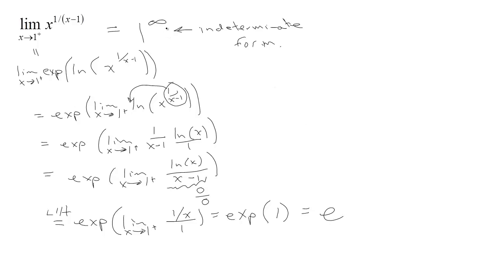So we had an indeterminate form that involved trouble with the exponent. We said, if we could take the natural log of this, the exponent could come down. So we took the natural log, but you can't just take the natural log unless you undo it — so we also put it inside the natural exponential function. Then we used the fact that the natural exponential function is continuous to pass the limit inside and focus on the limit of the expression involving the natural log. Since it was a log, we could bring the power down. We rewrote it in a form that had 0 over 0 so that L'Hôpital's would apply. We applied L'Hôpital's to the limit on the inside, got 1, and then e to the 1 is e.